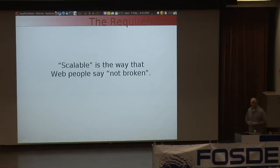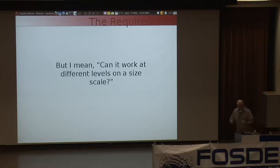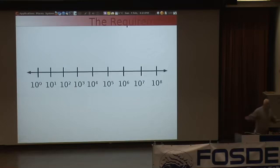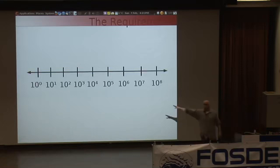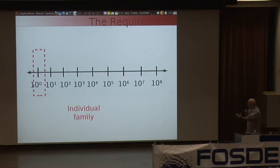Scalable is the way that web people say 'not broken.' When I say scalable, I mean: can it work at different levels on a size scale? On a logarithmic scale of community size, going from one person on the far left up to hundreds of millions on the right, we need to be able to reach across that entire scale — from an individual or a family, up to a school, church, or small company, into global web communities, all the way to very large installations like an ISP or mobile phone network.